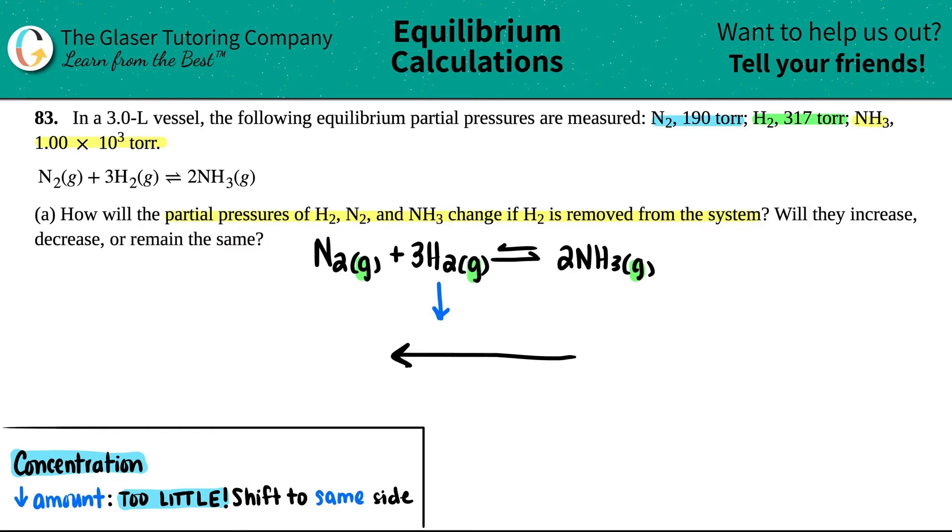And once you make that arrow, you can get rid of what happened, because now we're going to be talking about what is being done. If you're going this way, your reactants are going to increase, and your products will decrease. Remember, one side has to be going up, the other side has to be going down. And that's basically, we just basically answered the question, right?